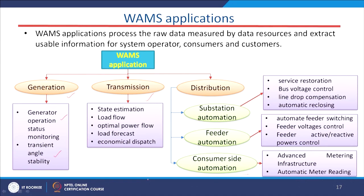Coming to the transmission part — state estimation, load flow, optimal power flow, load forecast, and economical dispatch — these are different operational parts of the transmission system. We can embed information from the WORMS technology to improve conventional load flow and state estimation processes to a higher version that is more realistic, more accurate, and more reliable for further processing.